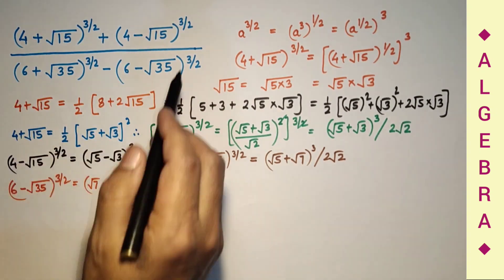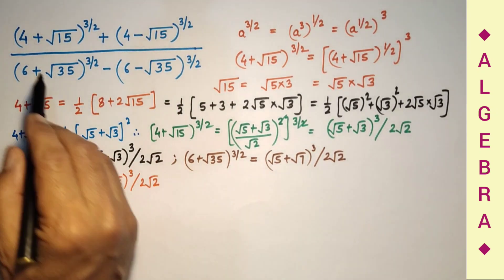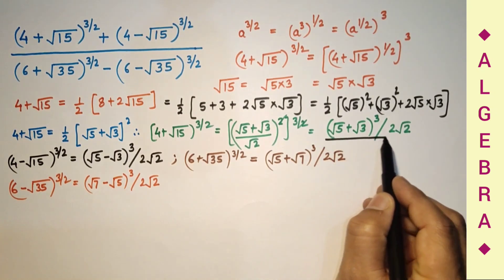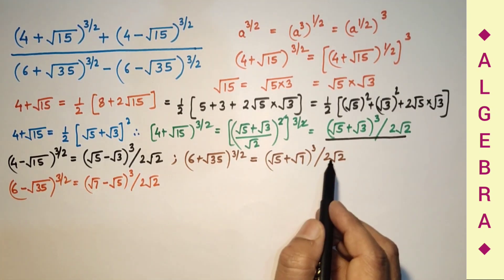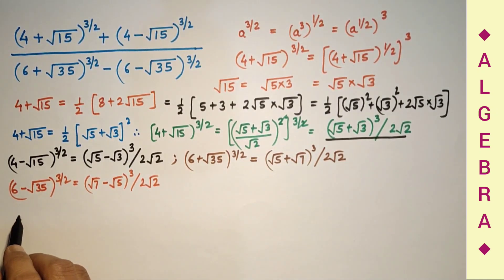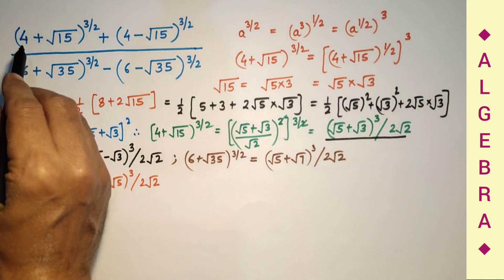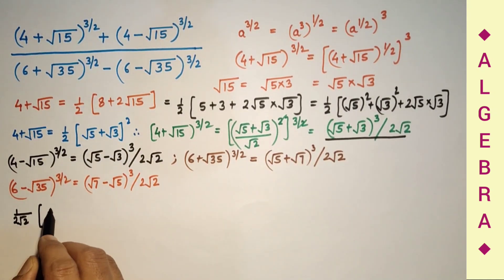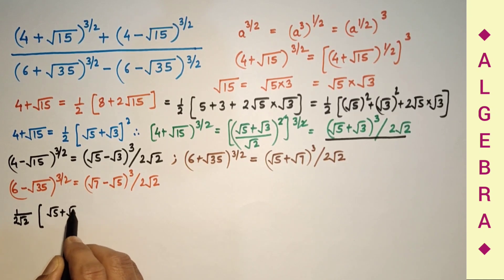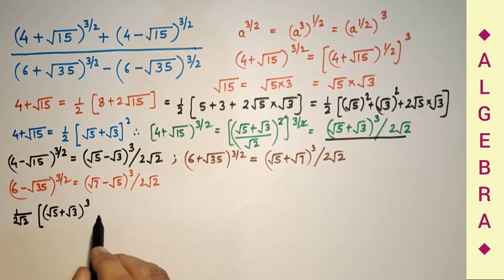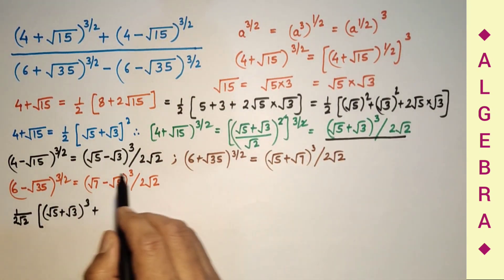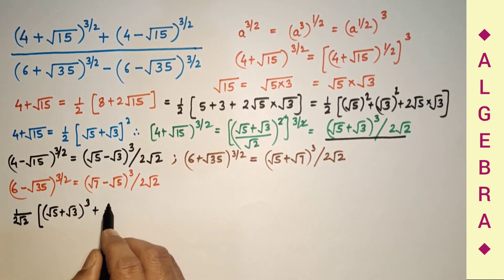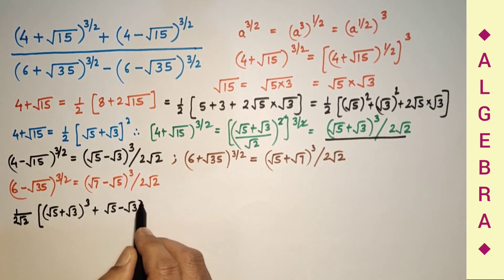Therefore this expression reduces as follows: the 2 root 2 denominators are common throughout — in all four terms — so 1 upon 2 root 2 cancels out. The numerator becomes (root 5 plus root 3)³ plus (root 5 minus root 3)³, since 4 minus square root of 15 equals (root 5 minus root 3) squared over 2.